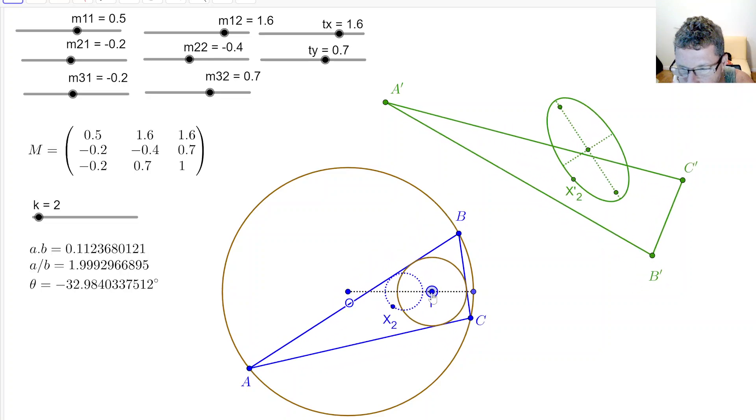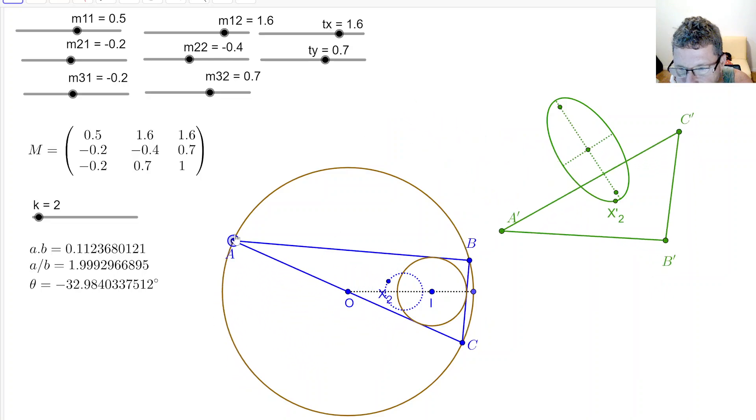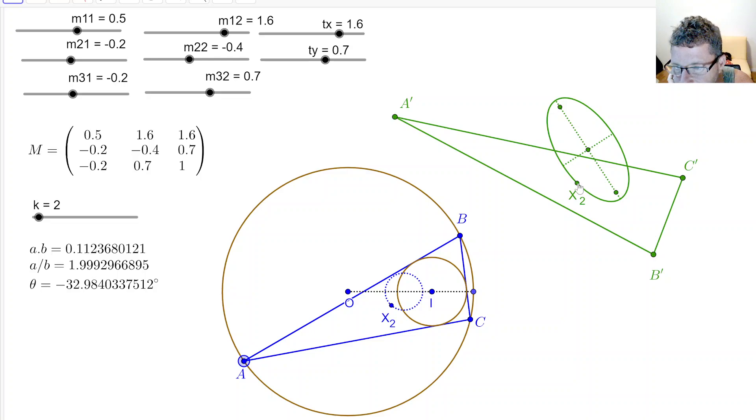My question here is, are there invariants on the loci of x2 traced by the projective image of ABC? So A prime, B prime, C prime has a barycenter, x2.